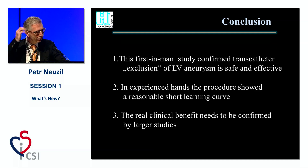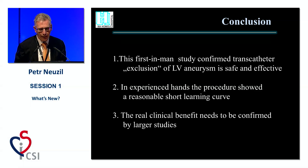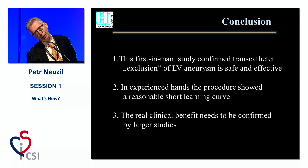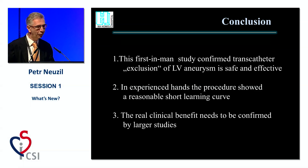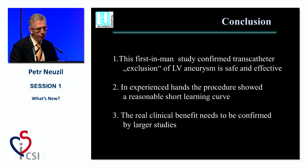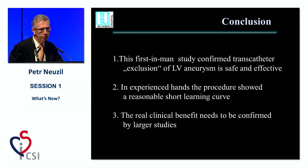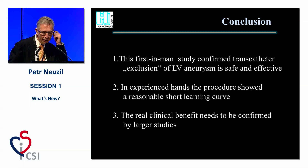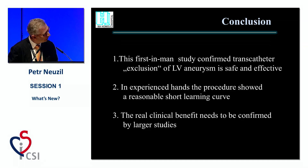In conclusion, this first-in-man study confirmed that the transcatheter hybrid approach for left ventricular aneurysm exclusion is feasible and involves a flexible team, which shortens the learning curve. We need more clinical cases and studies to confirm that we are doing a good job. Thank you. Thank you very much, Peter — thank you for your patience, and sorry for the interruptions.